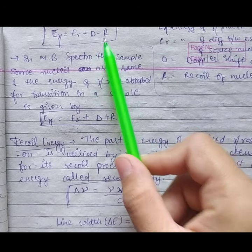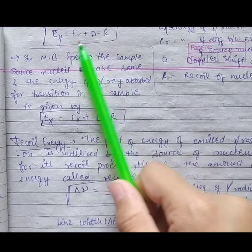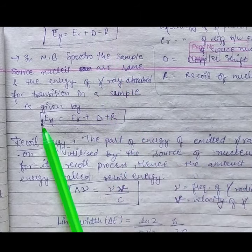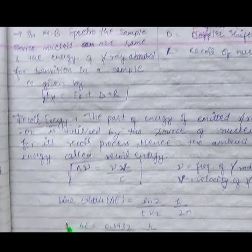The energy which is emitting in Mössbauer spectroscopy, for that, here for the energy, you just have to do D plus R. That is the main difference.